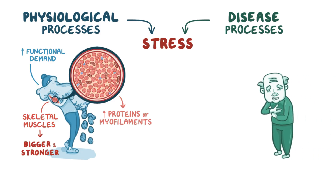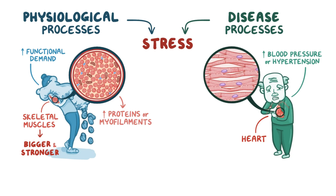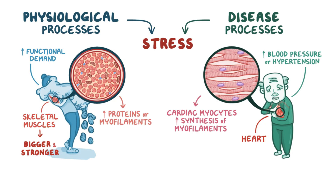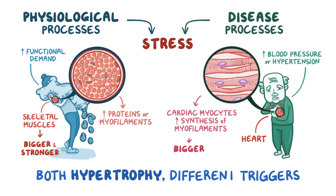An example of pathologic hypertrophy is when the heart undergoes hypertrophy to deal with high blood pressures, or hypertension. In hypertension, the heart has to pump blood against a high resistance, and cardiac myocytes once again adapt by increasing the synthesis of myofilaments, causing individual cells to get bigger. In both cases there's hypertrophy, but the triggers are quite different.